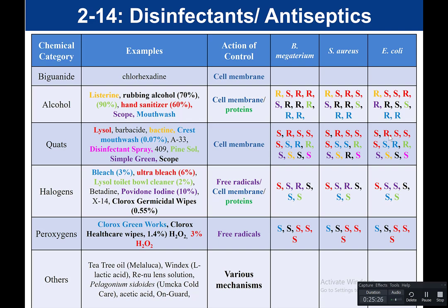For Crest mouthwash, Staph aureus is sensitive, but for B. megaterium and E. coli we see one sensitive and one resistant. For Simple Green and Bactine, all bacteria are sensitive. For Scope mouthwash, Bacillus megaterium and E. coli are sensitive, but Staph aureus is resistant. For the disinfectant spray, it's sensitive in all cases. Pine Sol was not very effective — resistant in every case.